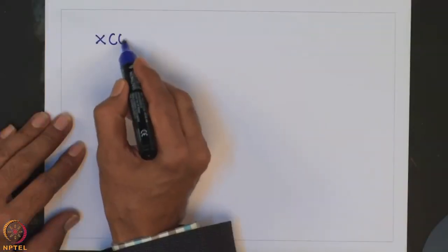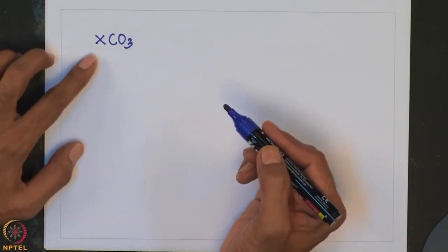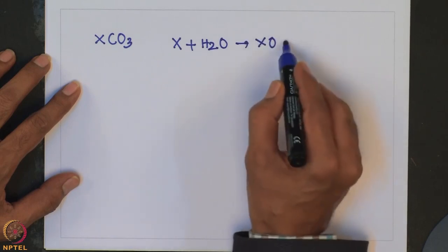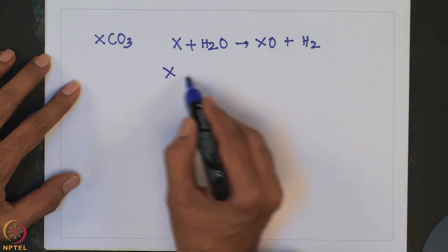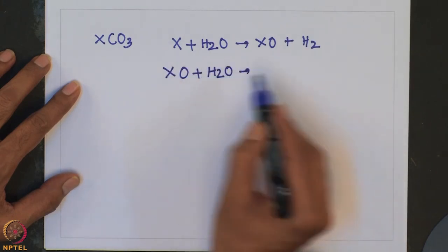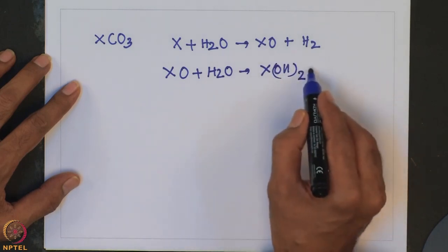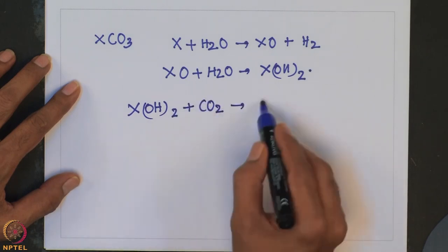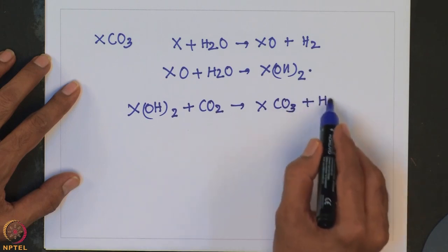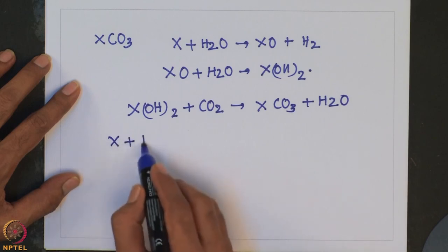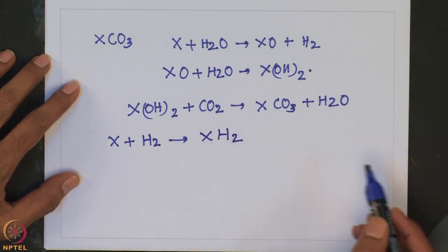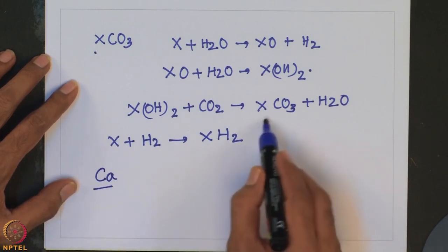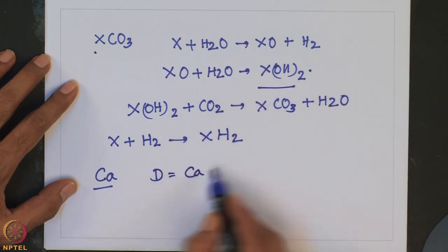Consider XCO₃ as the starting carbonate. X reacts with H₂O: X plus H₂O gives XO plus H₂, and XO with another molecule of water forms the hydroxide. This hydroxide reacts with CO₂ to give XCO₃ back plus H₂O. Also, X plus H₂ gives XH₂, the saline hydride used as a drying agent. Obviously, X is calcium and D is calcium hydroxide.